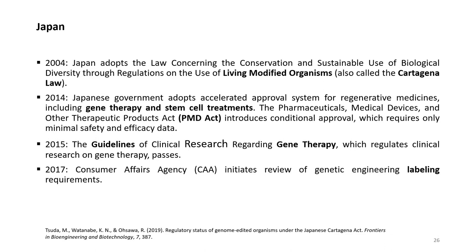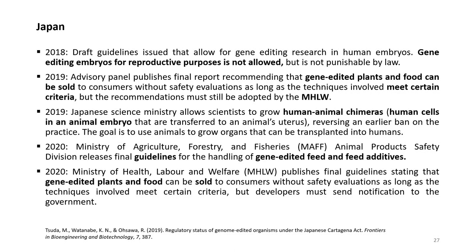In 2015, guidelines for clinical research regarding gene therapy were passed. In 2017, the Consumer Affairs Agency initiated a review of genetic engineering labeling requirements. In 2018, draft guidelines were issued allowing gene editing research in human embryos; gene editing of embryos for reproduction was not allowed but is not punishable by law. In 2019, an advisory panel published a final report recommending that gene-edited plants and food can be sold to consumers without safety evaluations as long as the techniques involved meet certain criteria, pending adoption by the Ministry of Health, Labour and Welfare. In 2019, the Japanese Science Ministry also allowed scientists to grow human-animal chimeras — human cells in an animal embryo transferred to an animal's uterus — reversing an earlier ban, with the goal of using animals to grow organs for human transplantation.